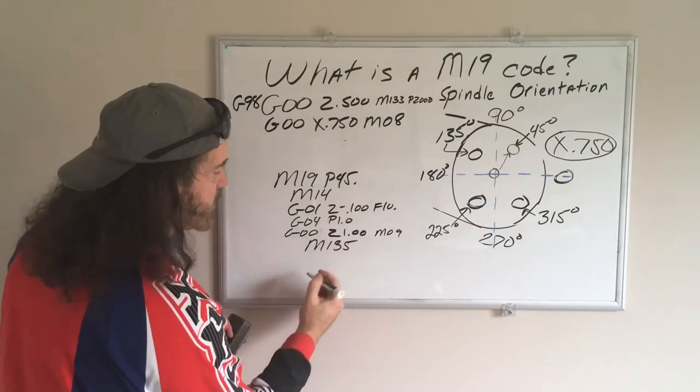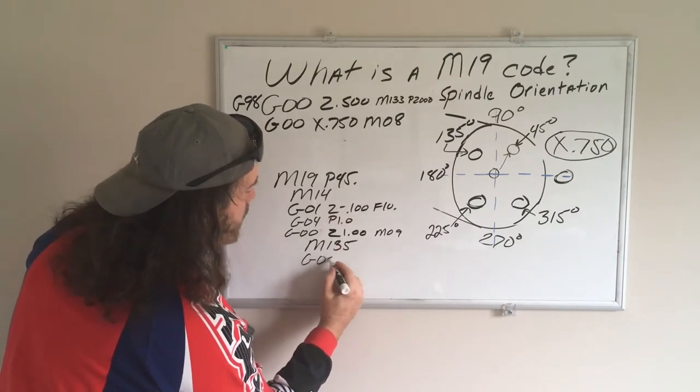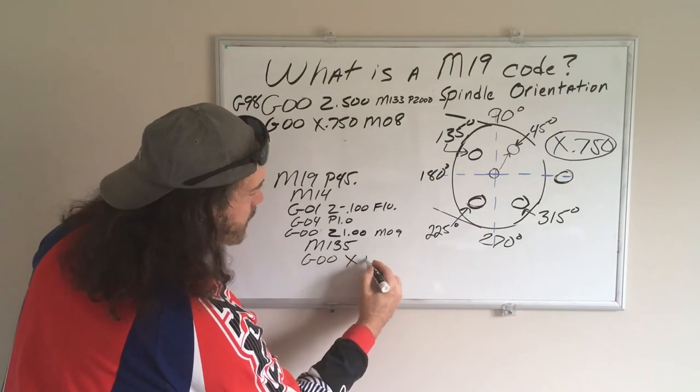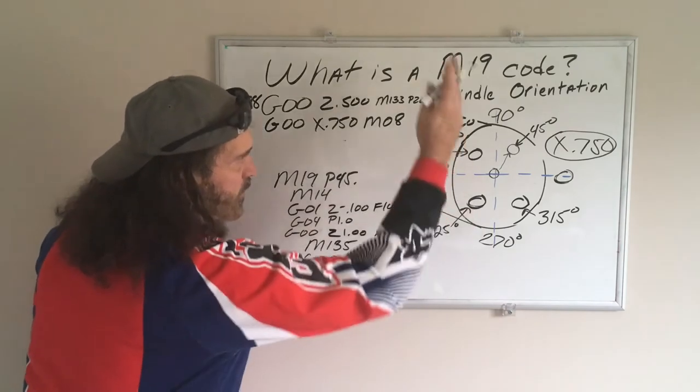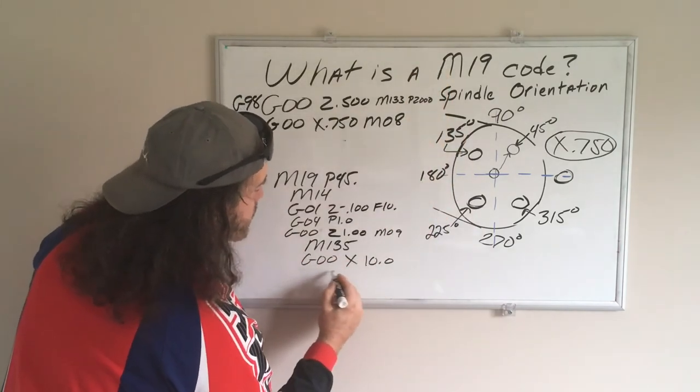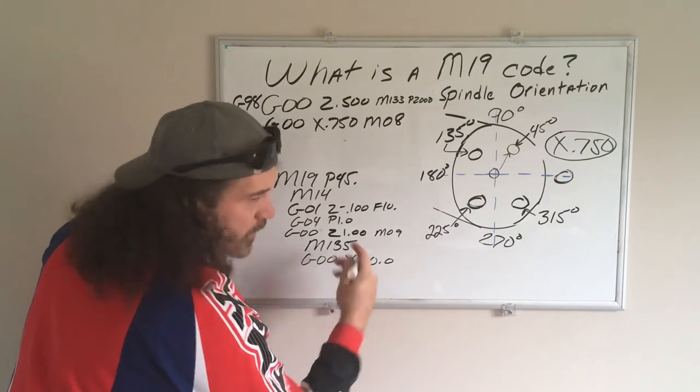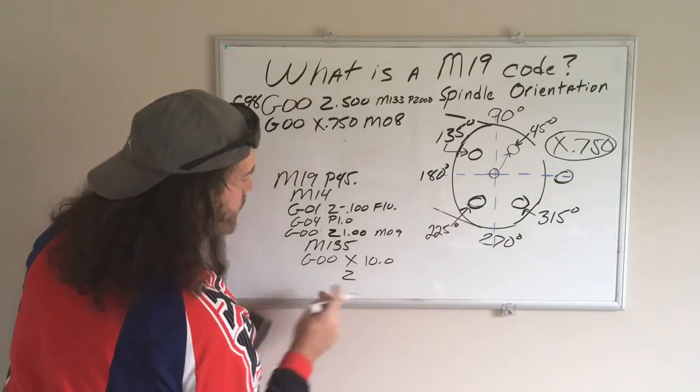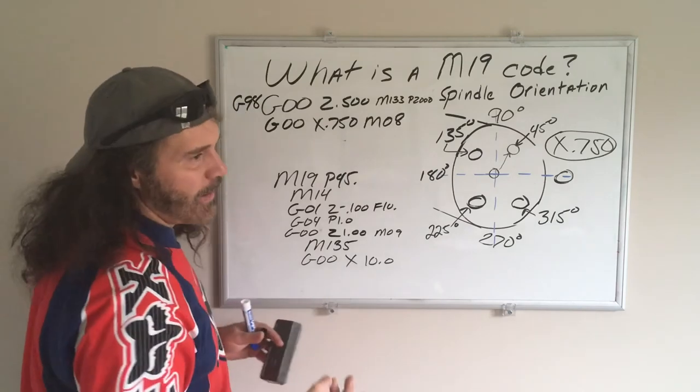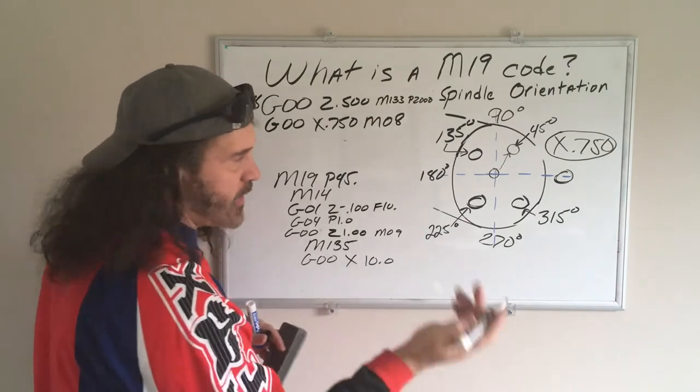But for this, I'll just put it in the next line. And then we'll just rapid to X, I don't know, 10 inches from center line. We'll rapid up and then we'll rapid back home.